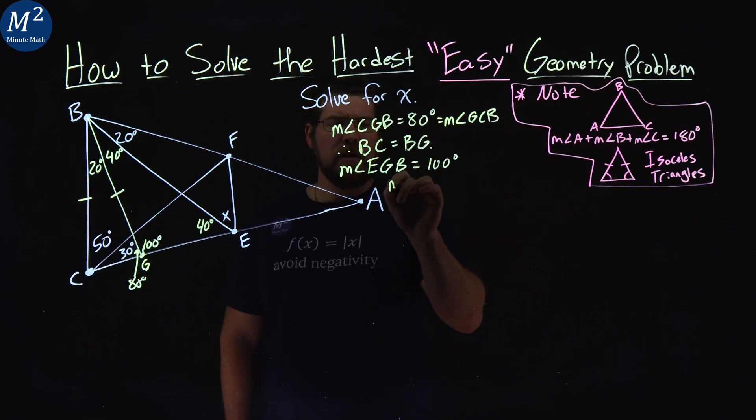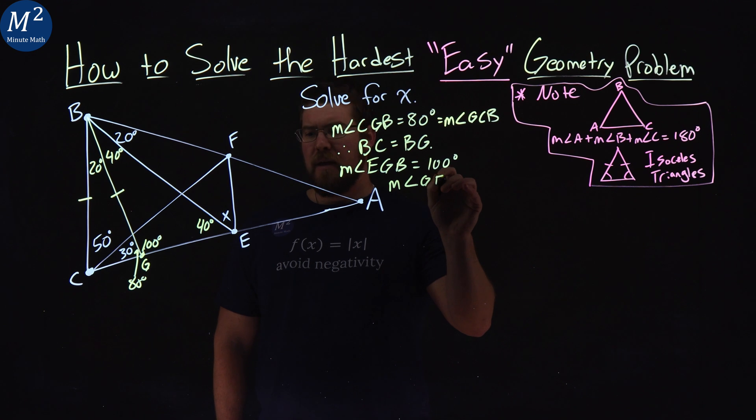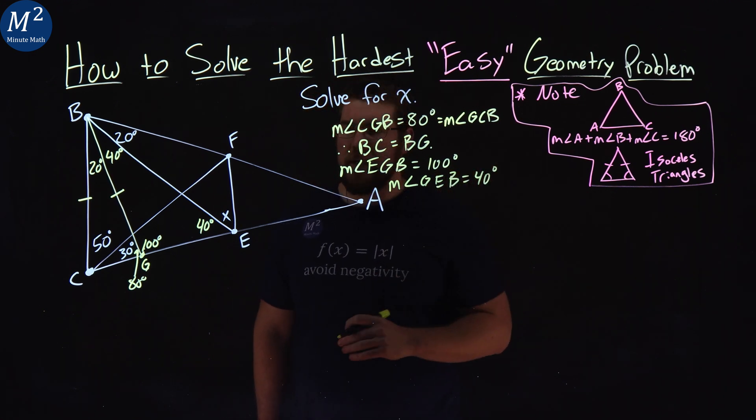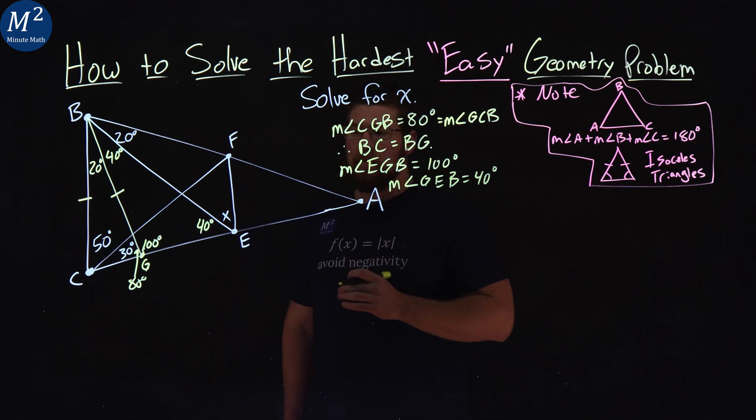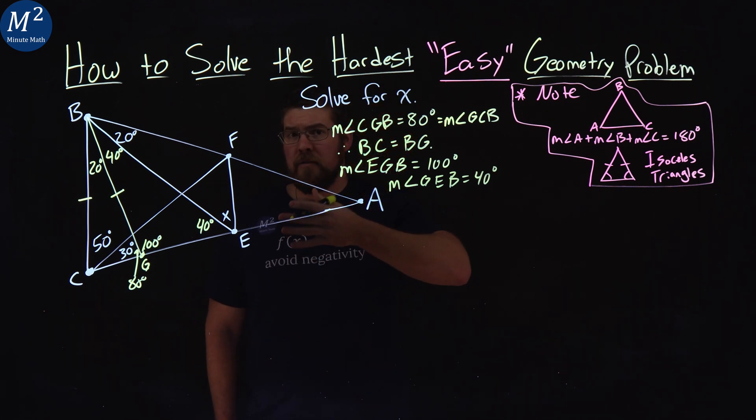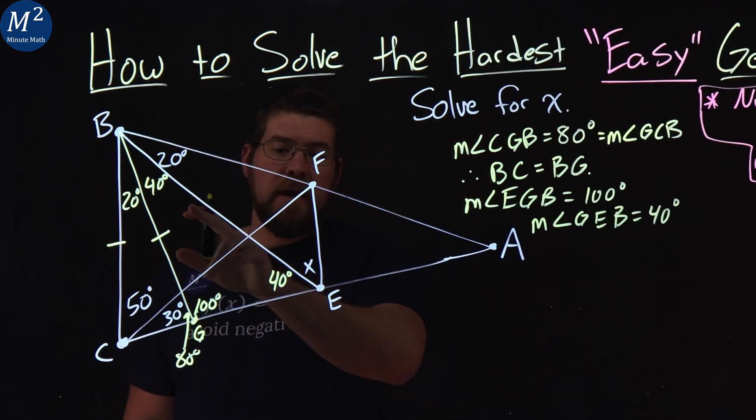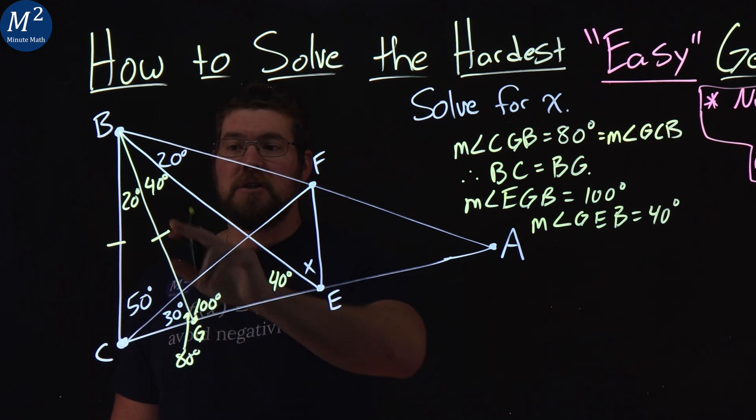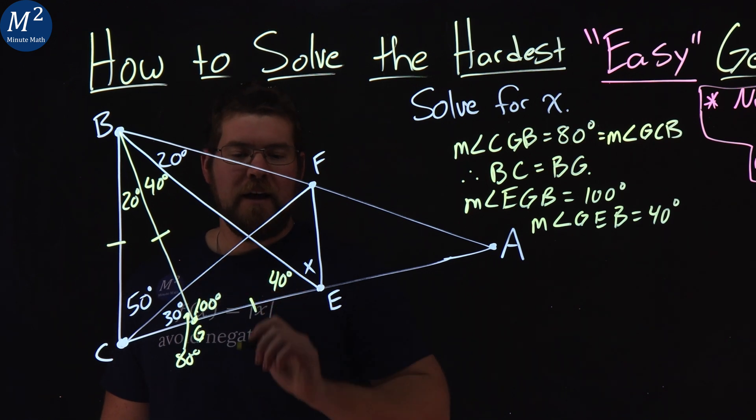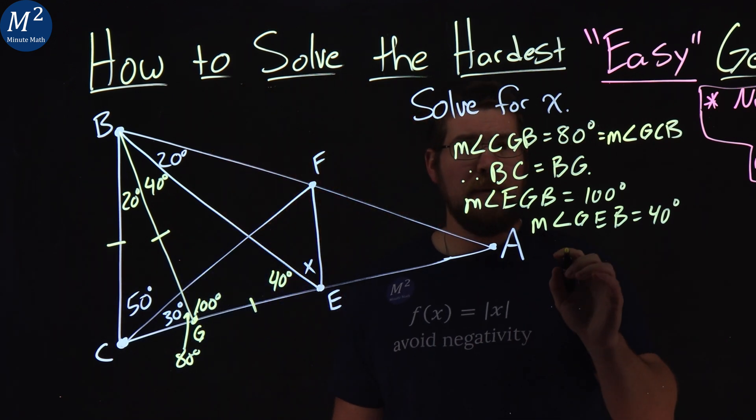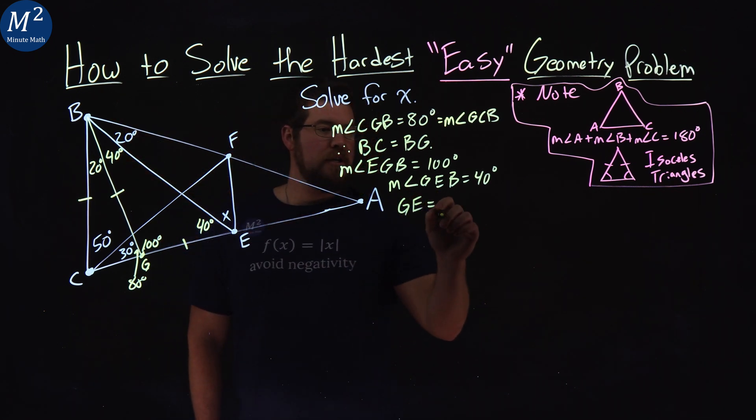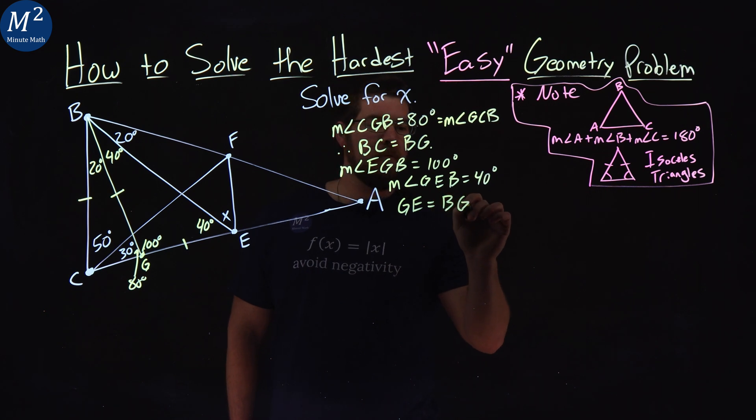Now we're going to apply again what we know about isosceles triangles. If our base angles are both 40 degrees, that means length GE is equal to GB. So we have that length here showing that they're the same. And so I'm going to say that GE is equal to that length BG.